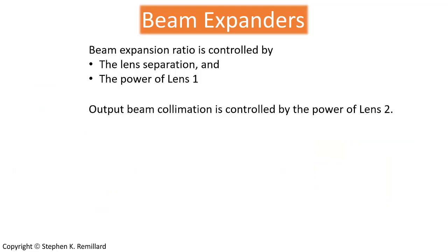So the beam expansion ratio is controlled by the separation between the two lens groups. You can also say it's controlled by the power of lens one, which you can adjust during the design, but in operation you can't turn a ring and change the power of the lens group.